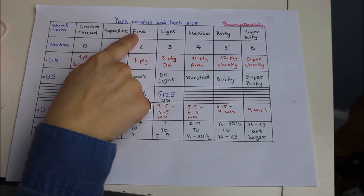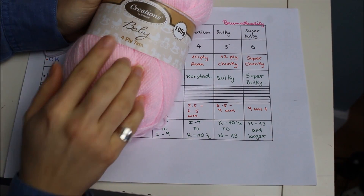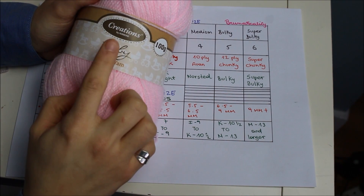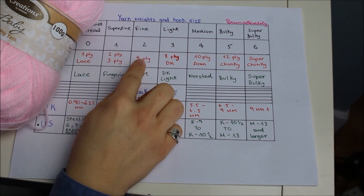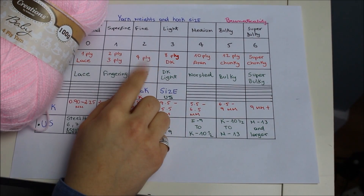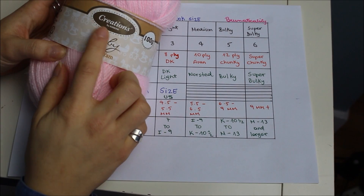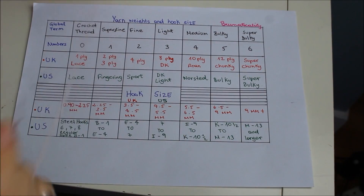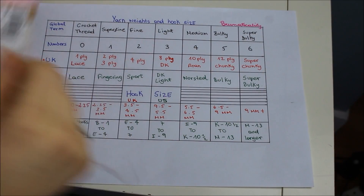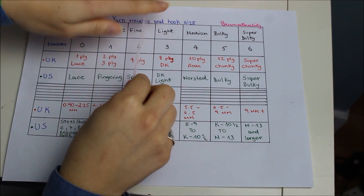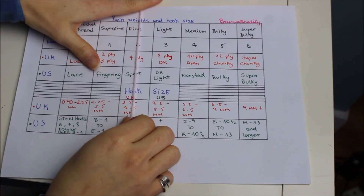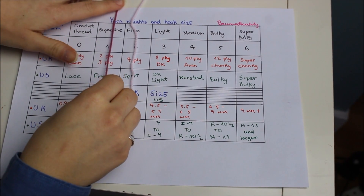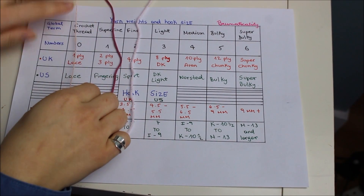For number 2, which is fine, I have this yarn here as an example. As you guys can see, it does state the yarn weight — both for US and UK — it's the 4 ply and the sport. Baby is another name they call number 2. This one is Creations by Corbond and I bought it at Sainsbury's. Let me show you guys the thickness — so here we have number 2, this one is number 1, and this one is number 0.